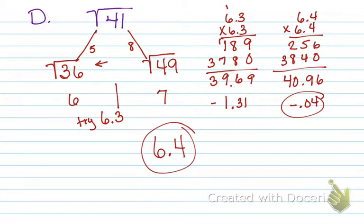So when I worked this one out, I'd guess for 6.3. And when I got my answer, I got 39.69. Which is a little bit away from 41. So 1.31. So I went to 6.4. 6.4 times 6.4 gave me 40.96, which is only .04 away. So definitely much closer. So my estimate, best estimate to the nearest tenth is 6.4.